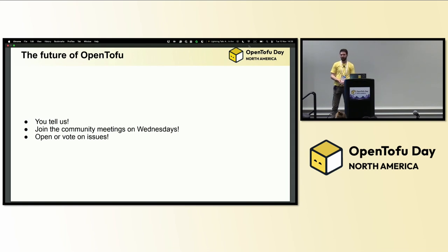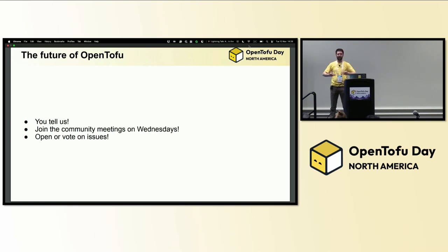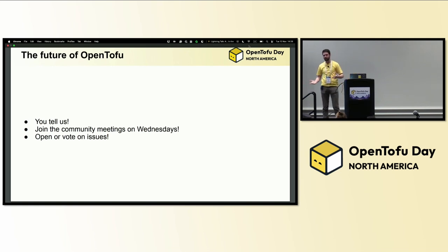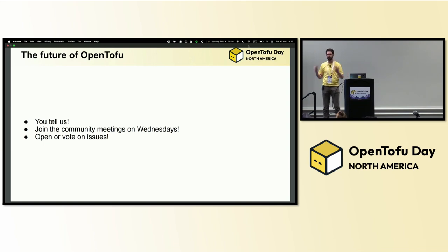I would love to ask everyone here: if you have a feature or a use case not currently served by OpenTofu, head onto GitHub. See if there's a conversation ongoing and hop into it. If there's an RFC in process, start talking about your use case, take a look at the proposed user documentation. Get involved in the process because that is what we're craving — that's what we're looking for, and that's what gets us up in the morning.